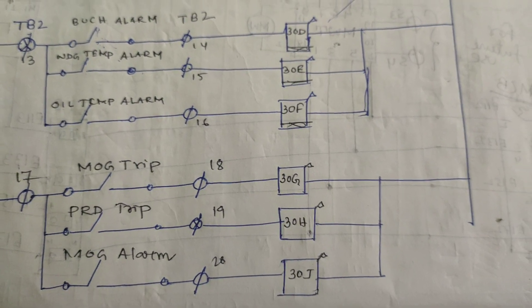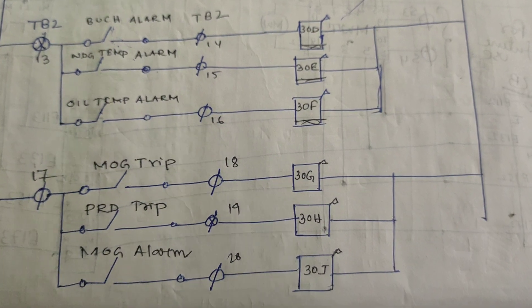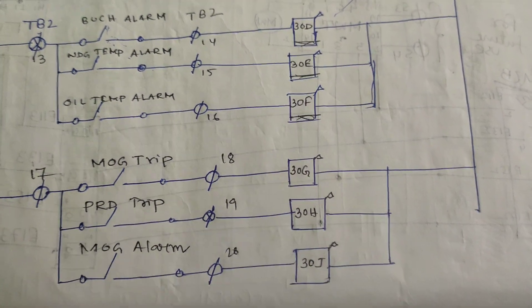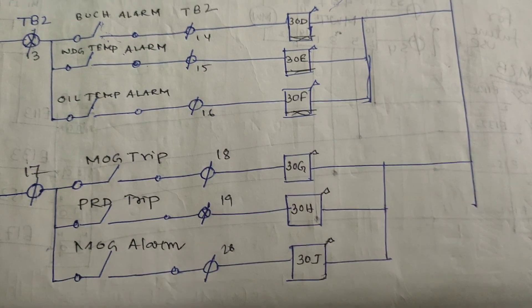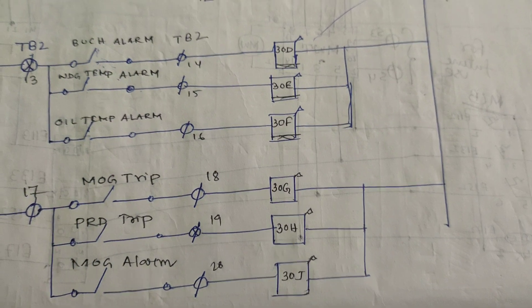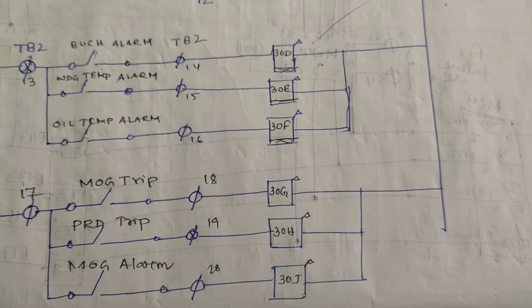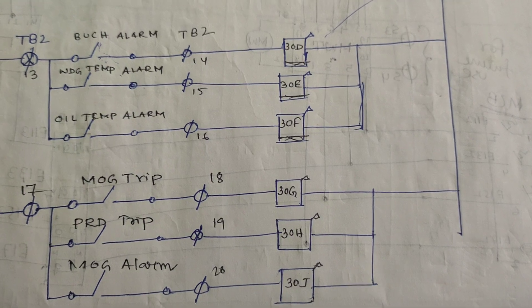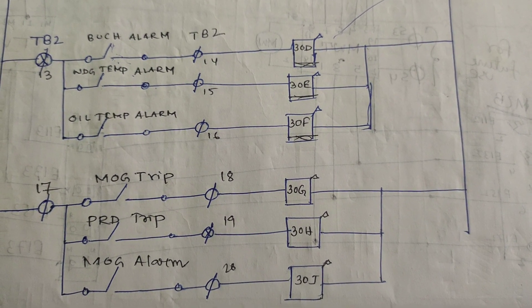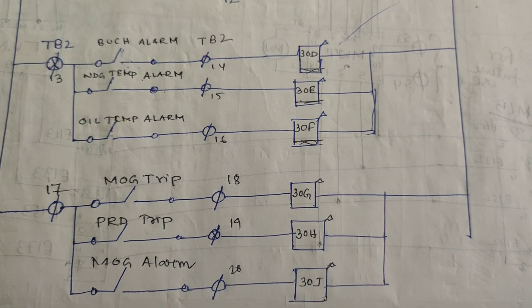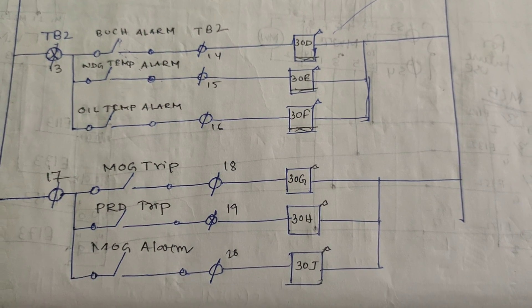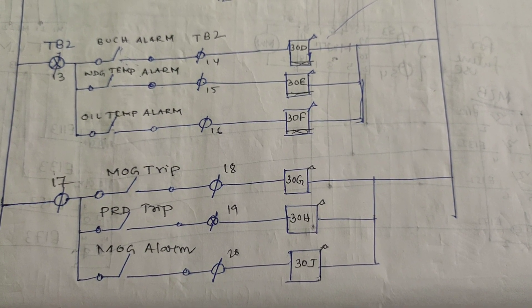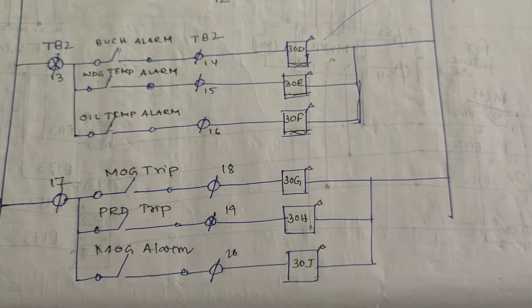The PRD — Pressure Relief Device — trip operates when there is a huge internal fault inside the transformer, such as severe winding burnout or a three-phase internal fault. A large amount of gas is generated very rapidly, creating high pressure. This pressure can rupture insulation papers and releases through the PRV valve on top of the transformer. If the PRD operates, it indicates serious transformer damage and testing must be done before switching on again.